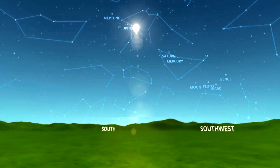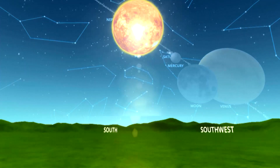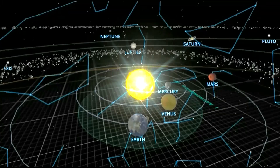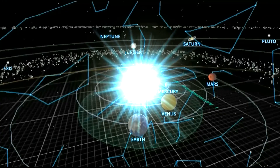Here you can see the position of the planets looking in the direction of the Sun. Up next is a magnified view. This is the position of the planets today.